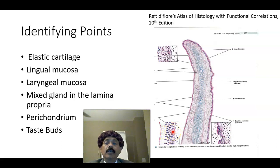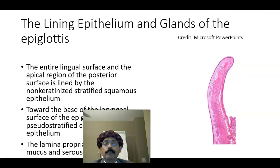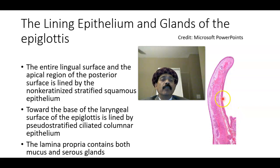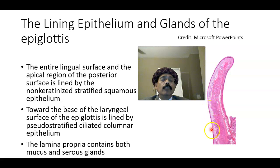That is the pseudostratified ciliated columnar epithelium. So on the laryngeal surface: the lower half is lined by pseudostratified ciliated columnar epithelium, the upper half by non-keratinized stratified squamous epithelium. The lingual surface is lined by non-keratinized stratified squamous epithelium.